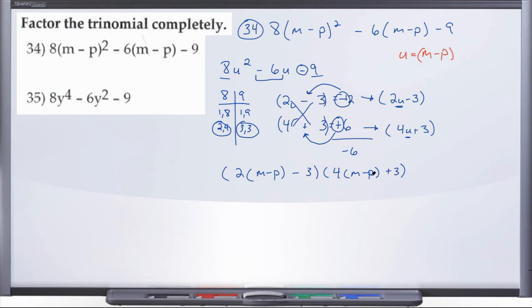And now let's go ahead and clean this up so we can distribute the 2 through. We're going to distribute our 4 through. And when we do that, we're going to end up with 2m minus 2p minus 3. And here we're going to end up with 4m minus 4p plus 3. And there you have the factored form for number 34.